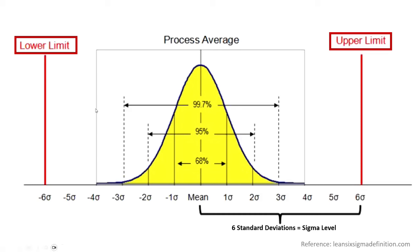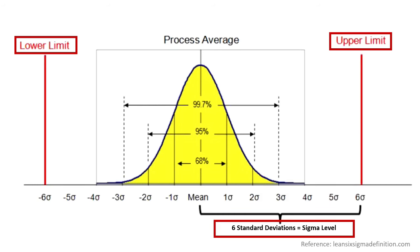Specification limits are values between which products should operate, and they're usually set by customer requirements. For example, think about a cap for a jar — the cap must fit the jar within a specific limit. If it's too small, it won't fit; if it's too big, it won't keep it sealed. That's why you have limits defining what you're producing must fit within the lower and upper. The bottom of the graph represents standard deviation, which is a measure of the amount of variation of a set of data points spread around the mean.